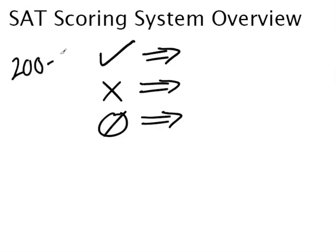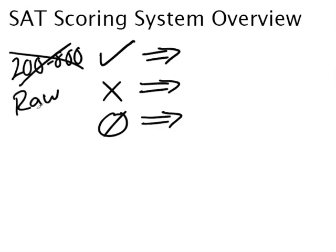The whole 200 to 800 thing — don't worry about that. The 200 to 800 is based upon what's called your raw score. Essentially, the higher your raw score, the higher your score on the test. Just worry about maximizing your raw score. Here's what you get in terms of your raw score depending on your response to the question.